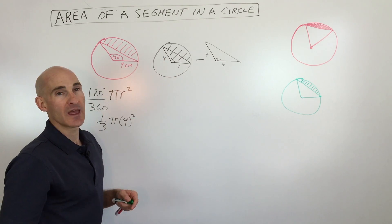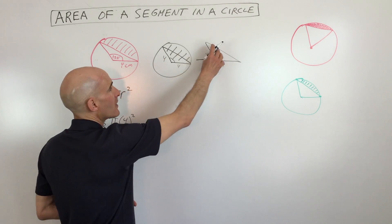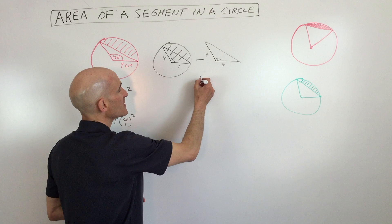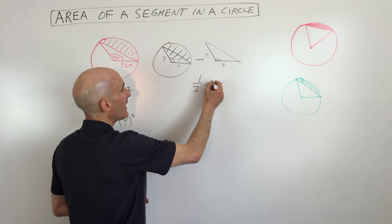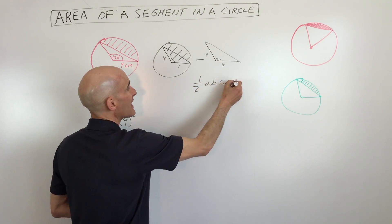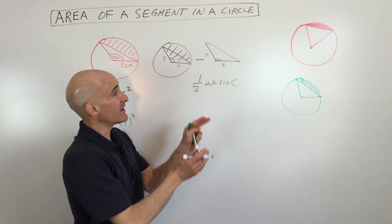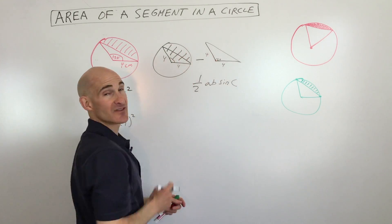So with me so far? We want to subtract off this area. Now there's a formula you can use, and it's one-half a b sine C. So a and b are the side lengths that make up the sides of this triangle.